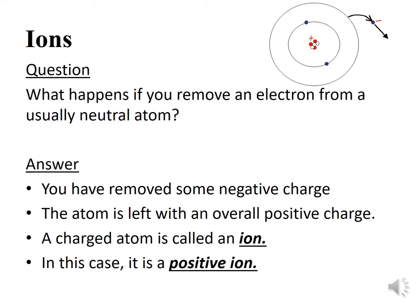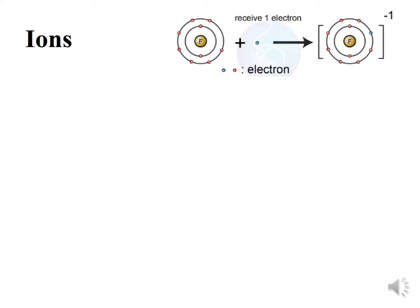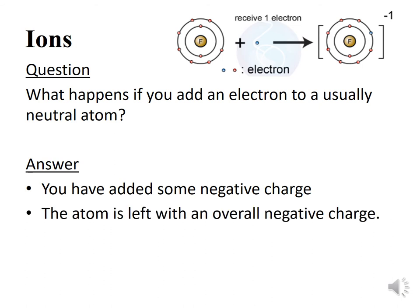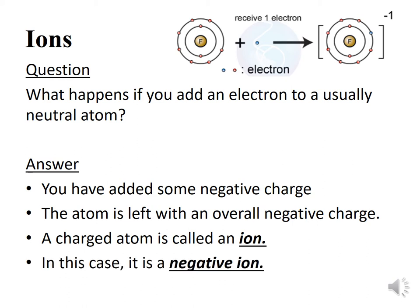It is also possible for an atom to receive an extra electron. What happens if you add an electron to a usually neutral atom? We have fluorine, which normally has its electrons and receives an extra one. The answer is you have added some negative charge — the atom is now left with an overall negative charge because it has more negative than positive. A charged atom is called an ion; in this case it is a negative ion. So we can create positive and negative ions.